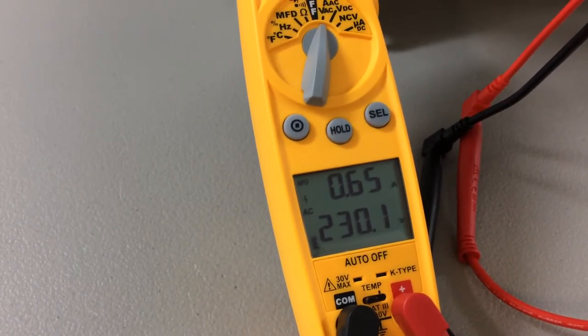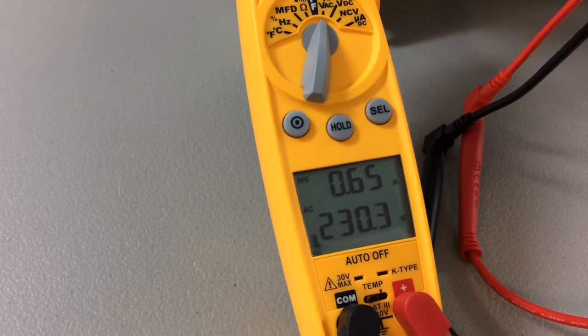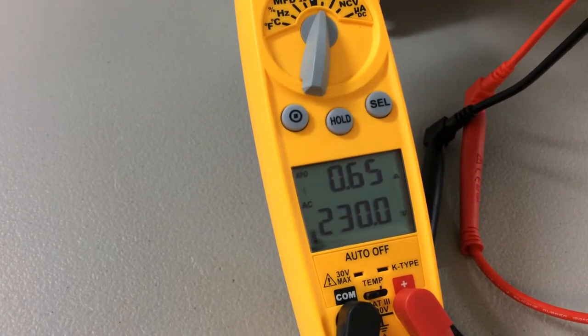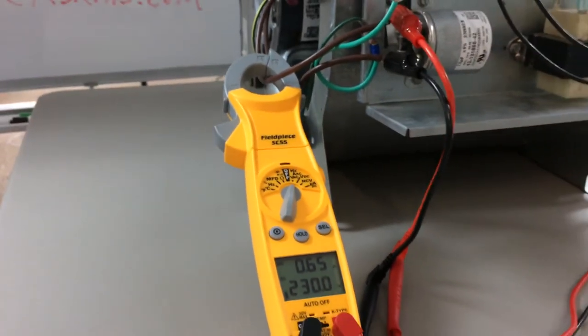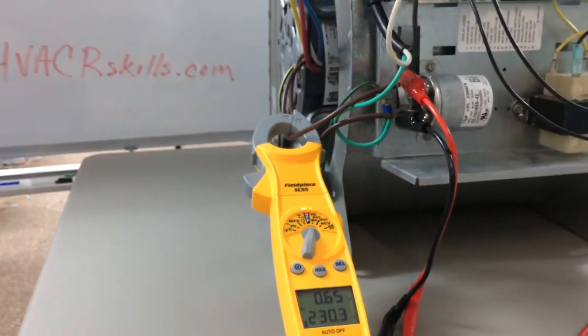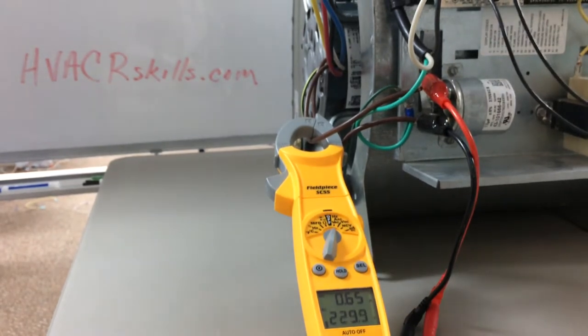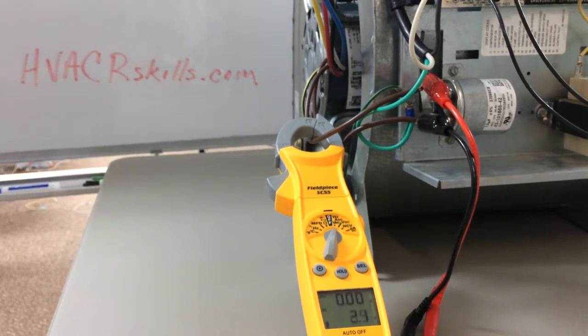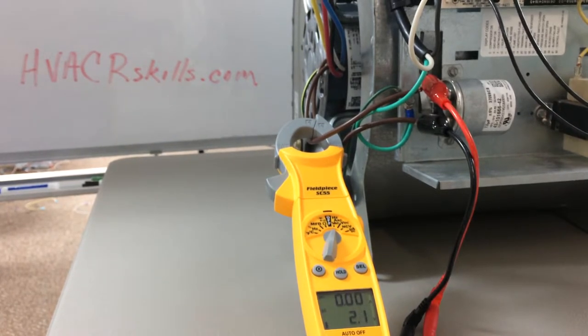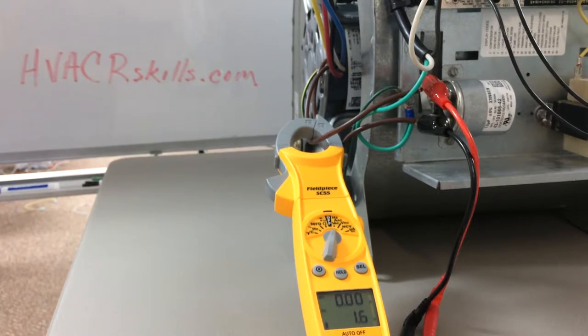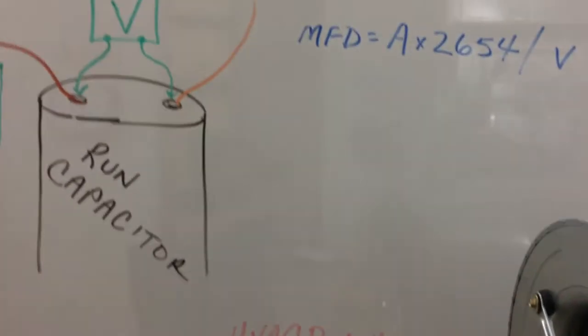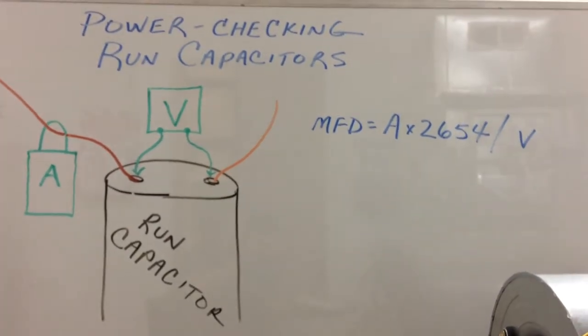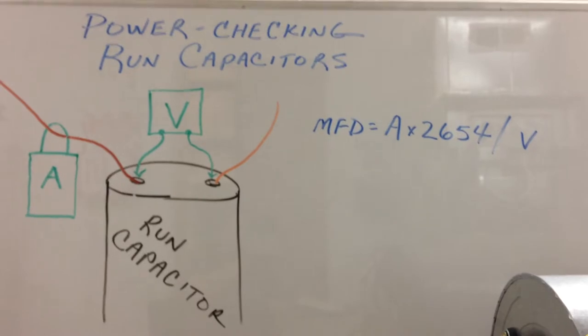So we've got 0.65 amps, and about 230 volts. 0.65 amps, 230 volts. Now the formula that we're going to use... And now I'll shut this back down so it's a little easier to hear.